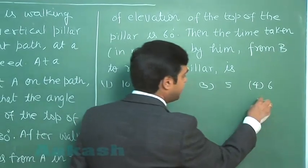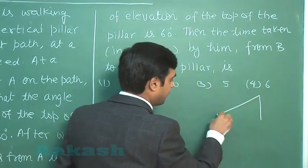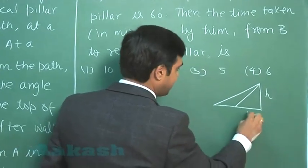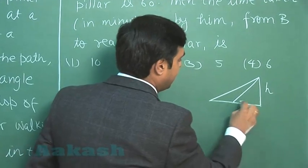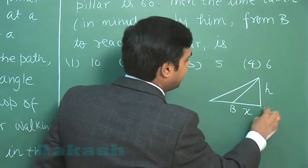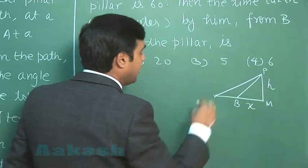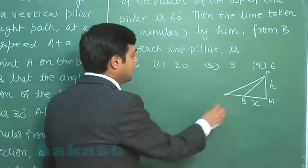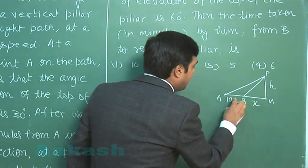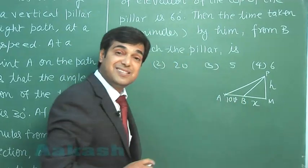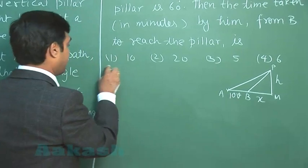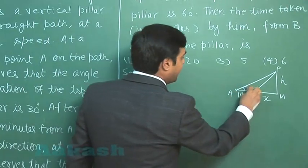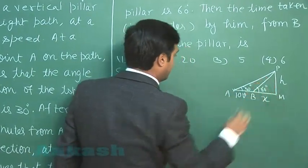So simple one from height and distance. Let us consider the height BH, the distance between B and the pillar say MB as X. Let us consider he is walking at a uniform speed of V unit per minute. So we can say from A to B, this is 10V, the distance travelled. This is clear, where V is his speed. So we can see here this angle given to me 30 degrees, next is 60 degrees.